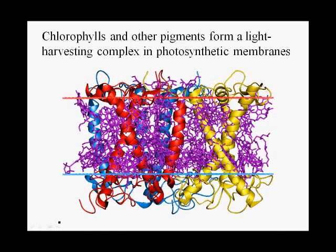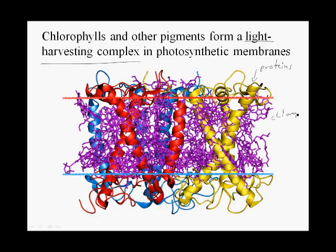This is a diagram of a light harvesting complex, which is a membrane structure consisting of both proteins and pigments. We have polypeptide chains — a protein with transmembrane domains, which are alpha helices located in the lipid bilayer — and they are associated with lots of pigments: chlorophylls and carotenes. Hundreds of chlorophyll molecules and carotene molecules are associated with proteins in a light harvesting complex, all located in membranes.